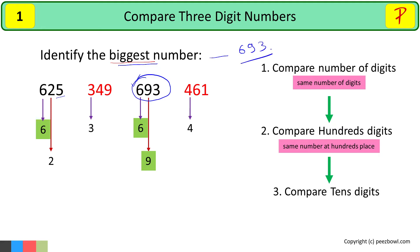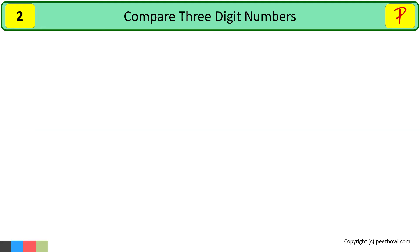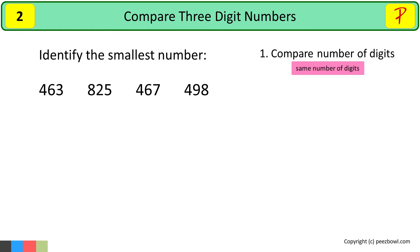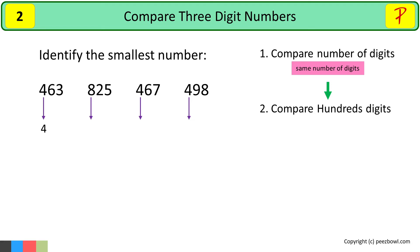Let us take one more example. In this example we need to find out the smallest number. First we will see if all these numbers have an equal number of digits. All these numbers have three digits, so we will move to the next step. Now we will compare the digits at the hundreds place. In 463 we have 4, in 825 we have 8, in 467 we have 4, and in 498 we have 4 at the hundreds place.